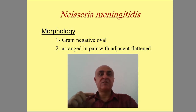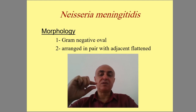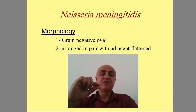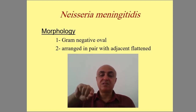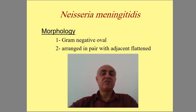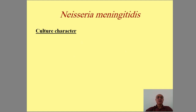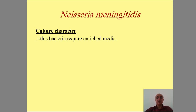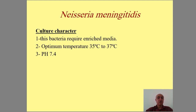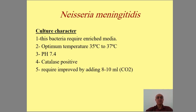The morphology is oval, like this shape — diplococci. This bacteria requires enriched media to grow. It is not a standard organism; it needs special enrichment conditions.